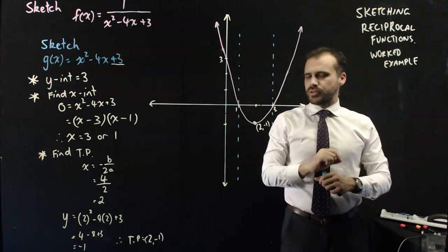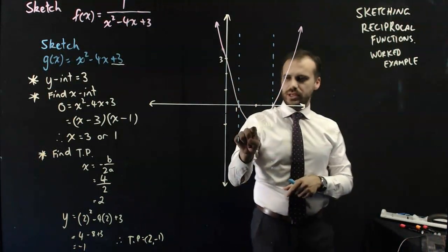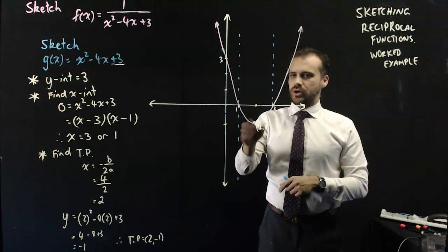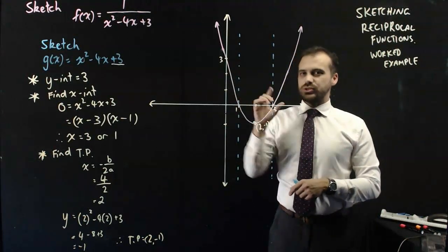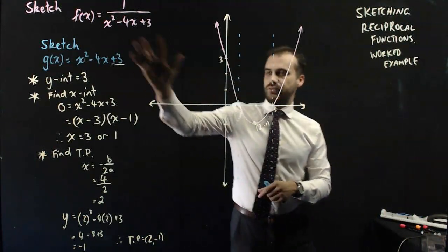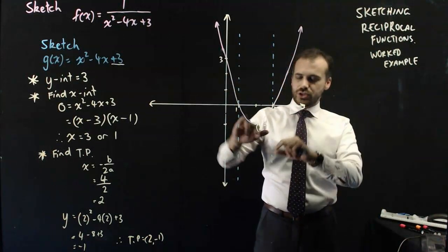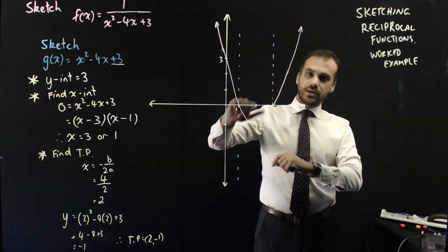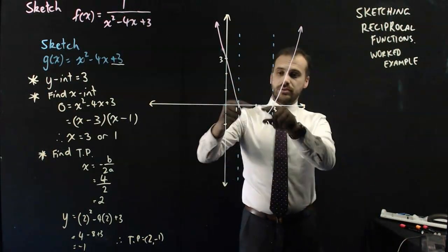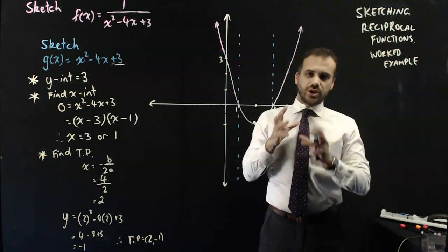Next thing I can probably think about is turning points. There's a turning point here at 2, negative 1 of the original function. There's also going to be a turning point of the reciprocal function. Now, the turning point here is a minimum. In the reciprocal function, the turning point is going to be a maximum. But I don't know where it is,